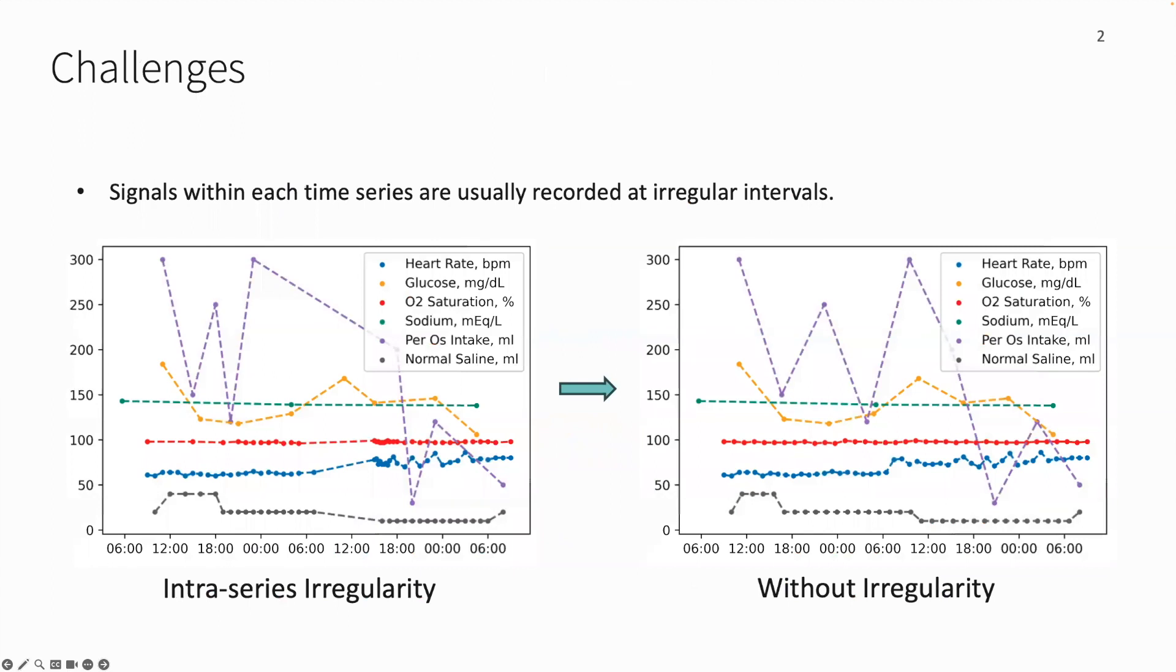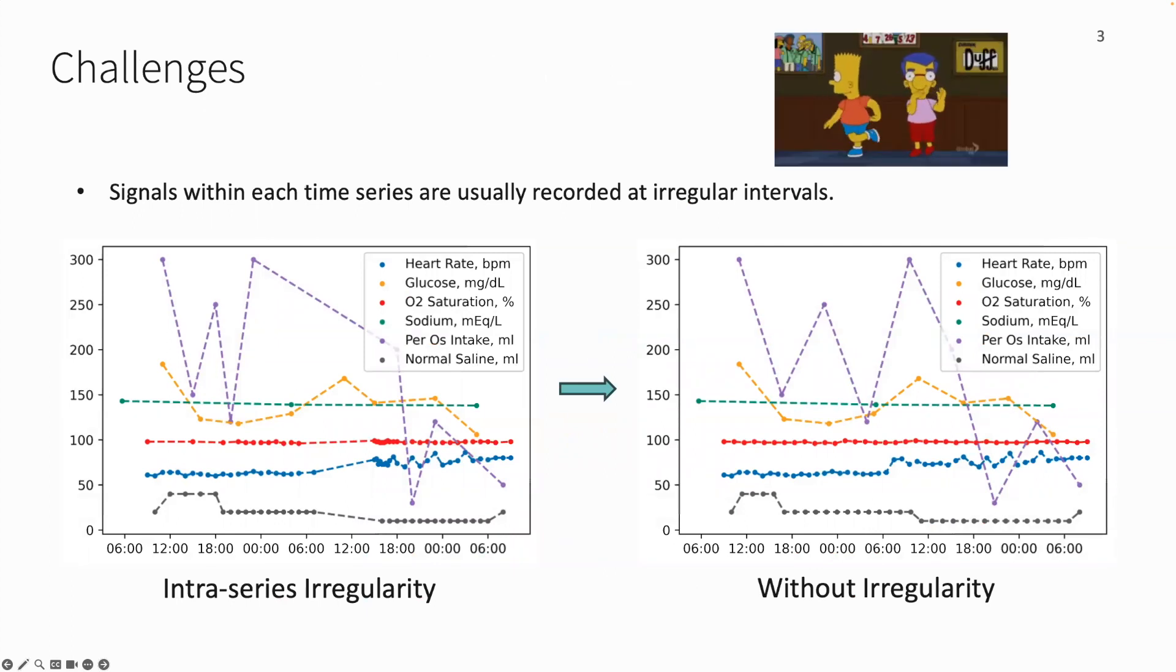However, traditional time series models struggle to handle such kind of data. It's like beginner dancers trying to measure constantly shifting beats. Motivated by this, for better modeling, we need more designs specific to capturing irregularity.